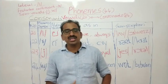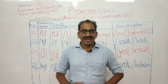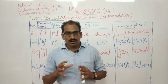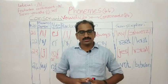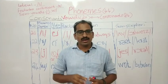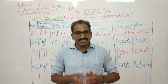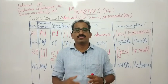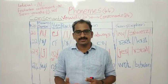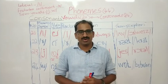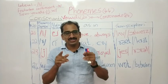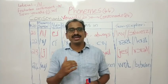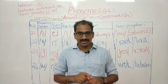In the last video, we had a discussion on vowel sounds — the 20 vowel sounds. In this video, we have discussed all 24 consonants. So far we have discussed 20 vowels and 24 consonants. Together they constitute the 44 phonemes in English.